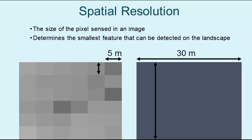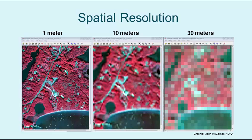The first of these image resolutions is spatial. This resolution refers to the size of a pixel in an image and will determine the types of features that can be detected on the landscape. For example, an image with a 5 meter pixel resolution will sense a smaller portion of the earth and give the ability to see more discrete features than an image with a larger pixel size. This graphic aptly illustrates this concept, as the information presented in the 1 meter pixel image is vastly different than the 30 meter pixel image of the same area.